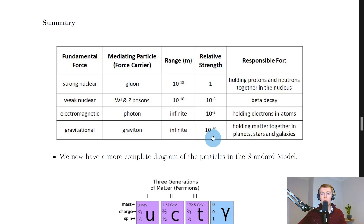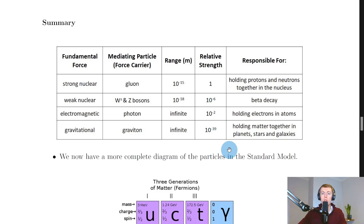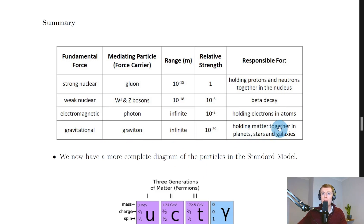The relative strengths are all compared to the strong nuclear force at 1. The electromagnetic force comes next at 10 to the minus 2; the weak nuclear force is 10 to the minus 6; and the gravitational force is 10 to the minus 39 times that of the strong nuclear force — by far the weakest. In terms of responsibilities: the strong nuclear force holds protons and neutrons together in the nucleus; the weak nuclear force is involved in beta decay; the electromagnetic force holds electrons in atoms; and the gravitational force holds matter together in planets, stars and galaxies.